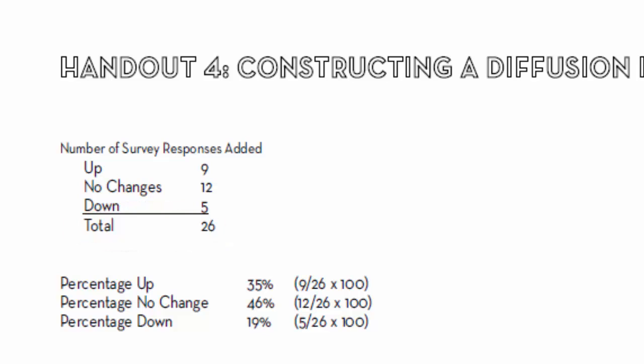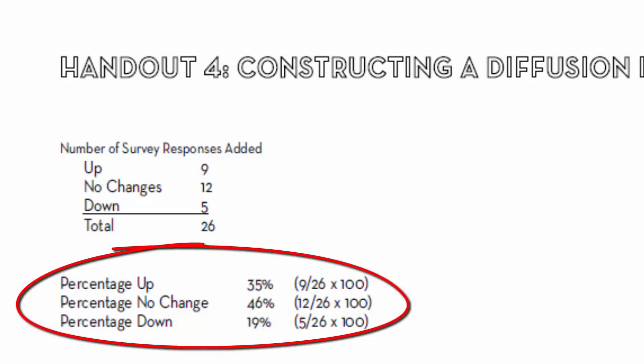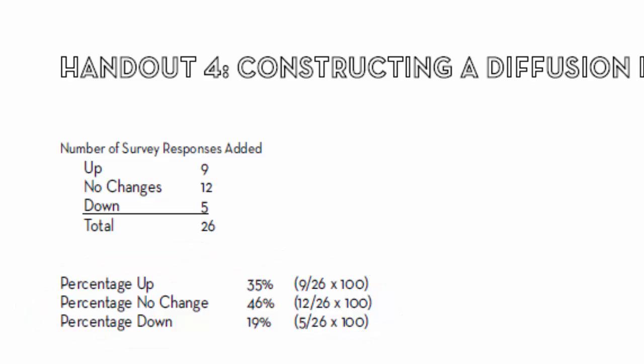The first thing you'll do is calculate each of those categories as a percentage. To find the percentage of respondents that said activity was up, take the 9, divide it by 26, and multiply by 100. That's 35%. Do the same for the other two categories. Your percents will total to 100.